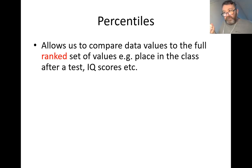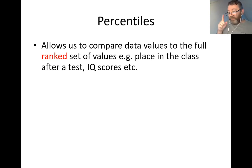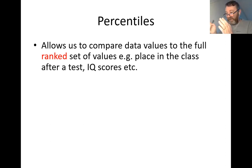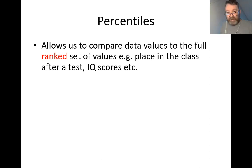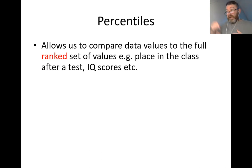What about the 40th percentile for 30 students? 40% of 30 works out as 12 — a whole number. In that case, you take the 12th and the 13th value, add them together, and find their mean. That mean value represents the 40th percentile. Scores below that are below the 40th percentile; scores above are above it.